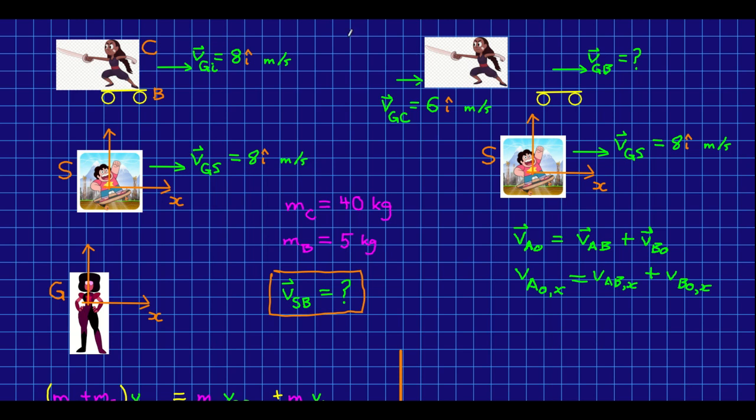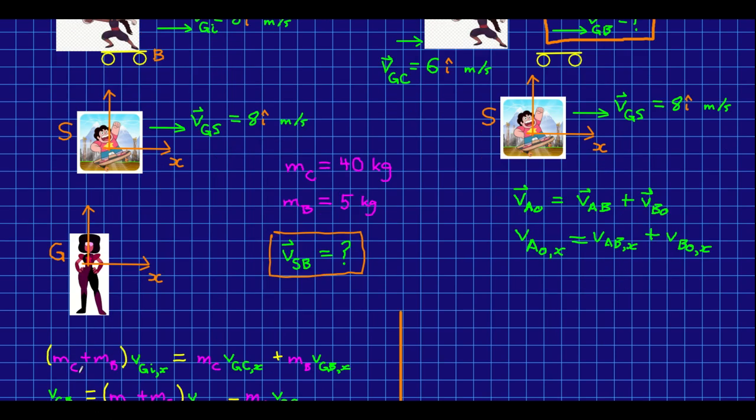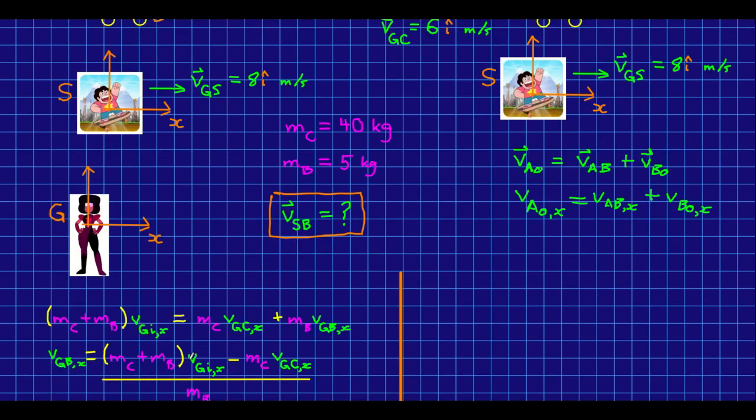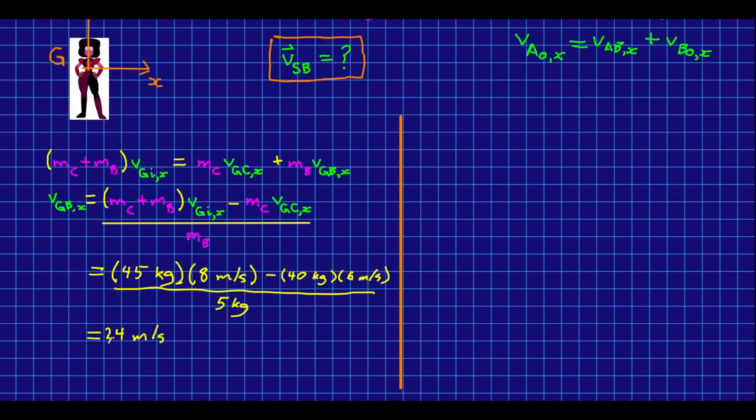The first thing to realize is that we can easily find the board's velocity relative to Garnet using methods we already know from previous units. There's no new physics here. This is just an explosive separation where there's only one unknown velocity. And so all we need is conservation of momentum. And so here is conservation of momentum for the system of Connie and her board in Garnet's frame of reference. And that can be solved reasonably easily. And you can work it through and get this answer.